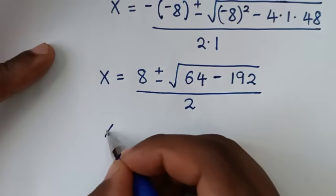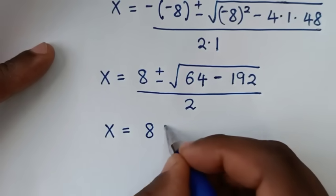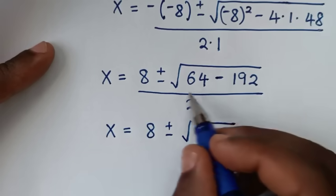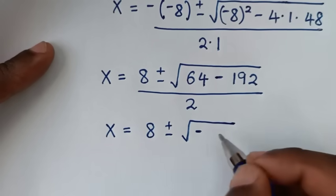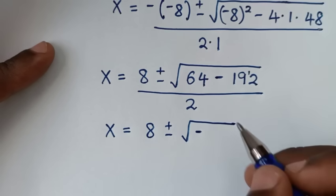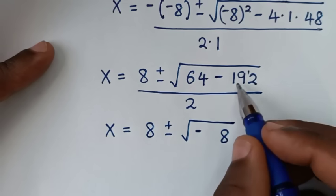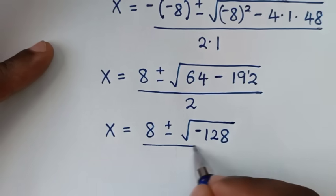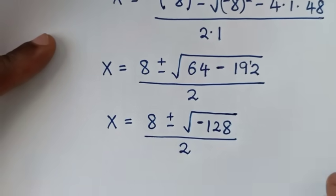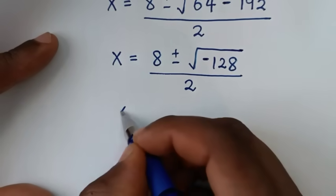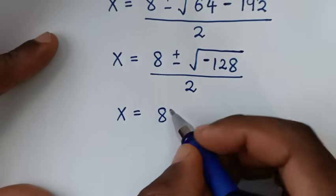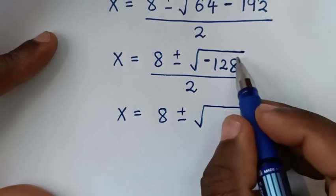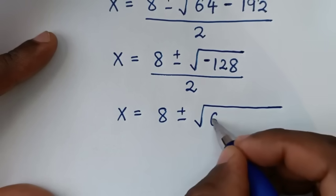Then it will be x is equal to 8 plus or minus square root of this minus this, it is negative. So here 12 minus 4 is 8. Here it will be 18. 18 minus 6 is 12. Then over 2. Then it will be x is equal to 8 plus or minus square root of negative 128, which is the same as 64.